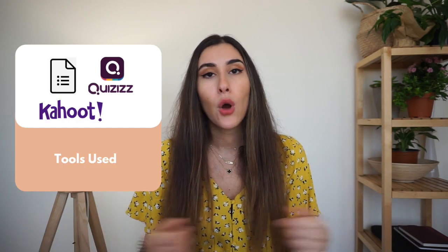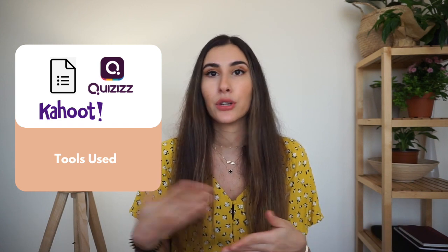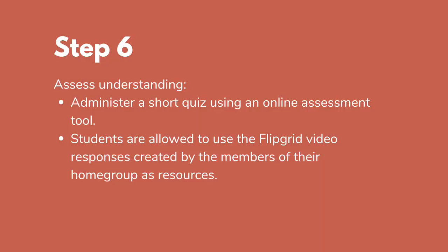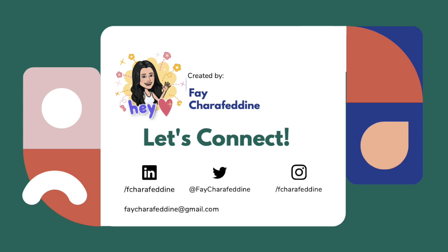Step six: have some form of assessment component. An excellent way to do this is to create a Google Form, or you could use quizzes or Kahoot. Students can use the videos uploaded by their home group teammates to help them answer the assessment questions. This ensures two things: first, that students have actually watched each other's videos and learned from them; and second, that they feel a sense of responsibility to create high-quality content, knowing there will be an assessment at the end.